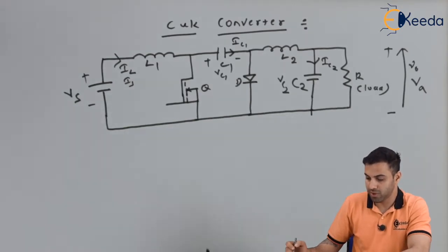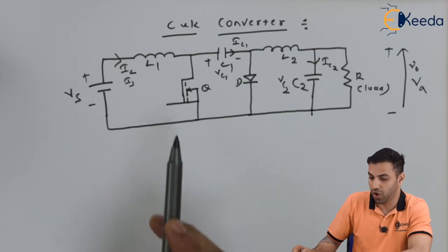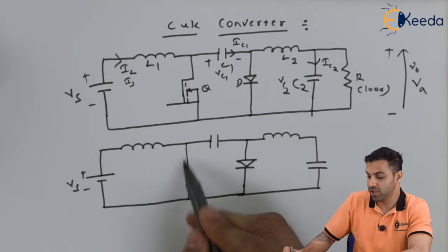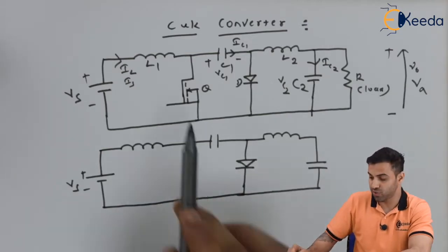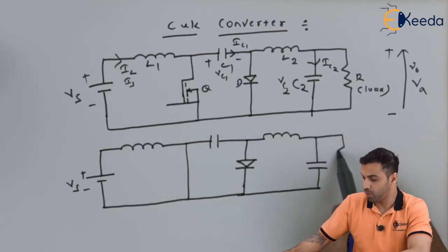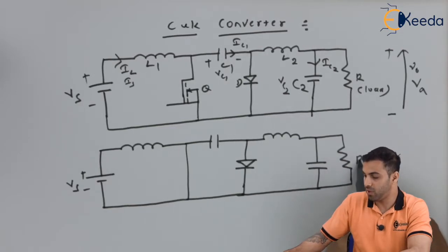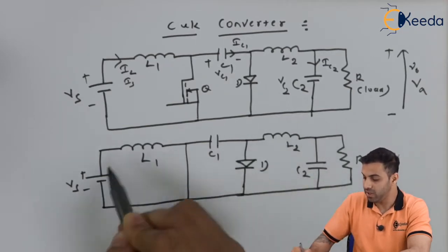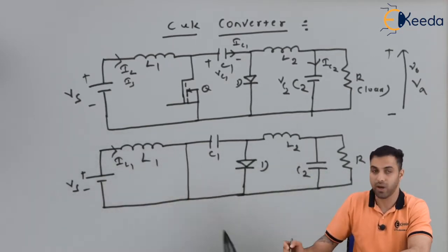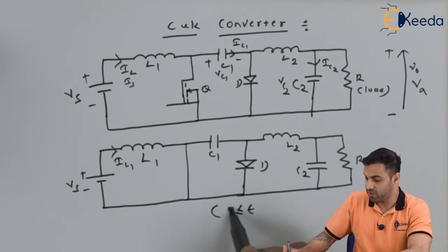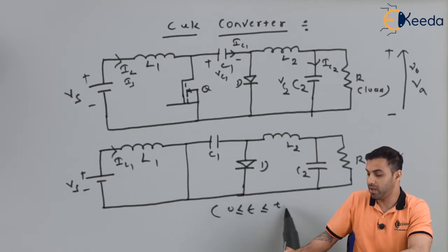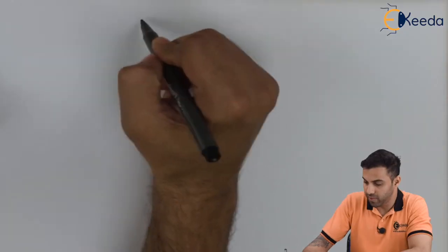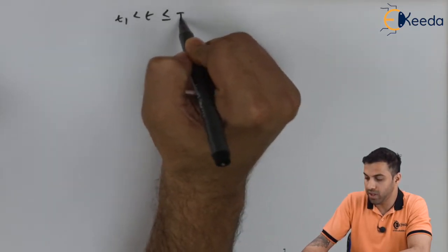When the switch is ON, the circuit operates from time 0 to T1, where T1 is the on-time. The components in this state are: output resistive load R, capacitors C2 and C1, inductors L1 and L2, diode D, and inductor current IL1.